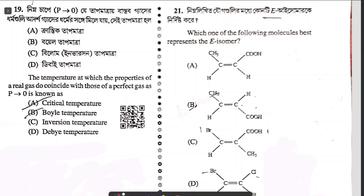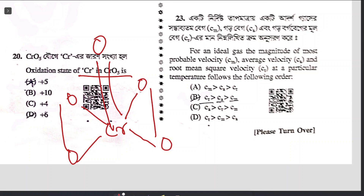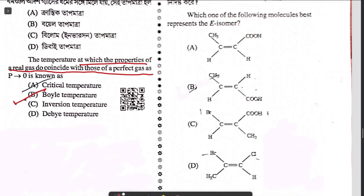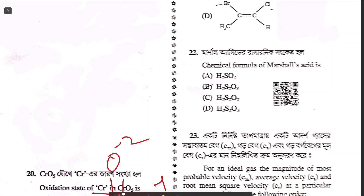Question nineteen: the temperature at which properties of real gas coincide with properties of a perfect gas (when pressure tends to zero) is the Boyle temperature — option B. Question twenty: the oxidation state of chromium in CrO5. You must know the structure of CrO5: there is a peroxide linkage (–1) and normal oxide (–2). Correct answer is D. Question twenty-one — best represented by E isomer — option B. Question twenty-two: chemical formula of Marshall's acid is H2S2O8 — answer 22B.